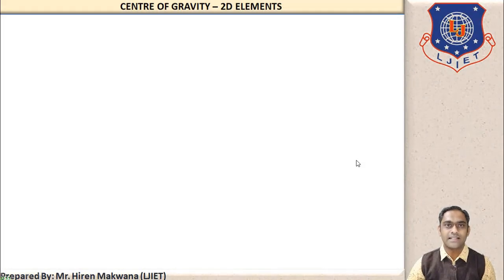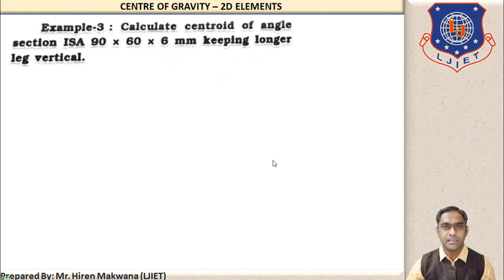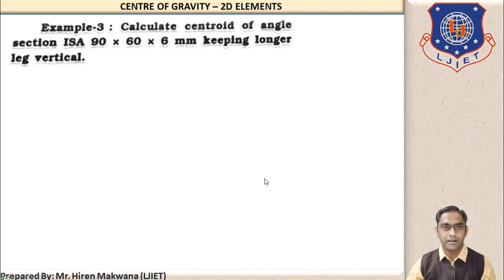Let us start lecture number 16. Today we will discuss some more examples based on 2D elements — areas. Let us see example number 3: calculate the centroid of an angle section 90 by 60 by 6 mm, keeping the longer leg vertical. Dimensions will not be clear without the figure, so let us check the figure first.